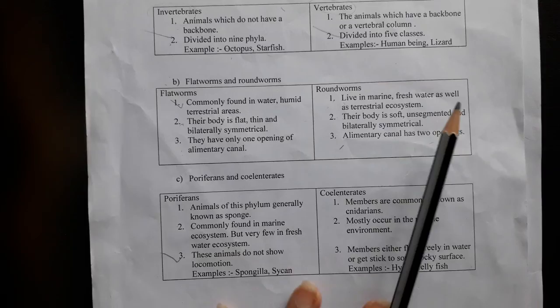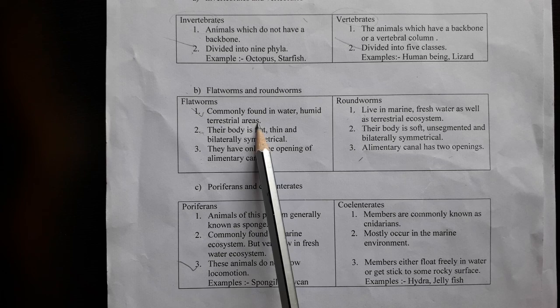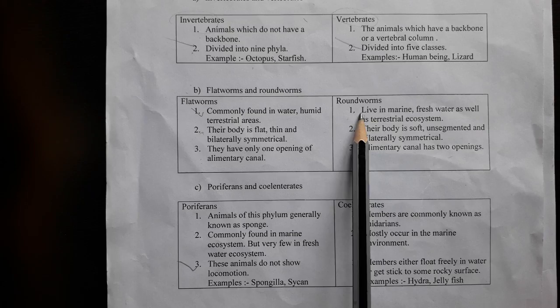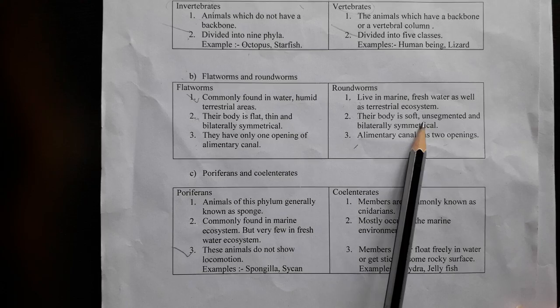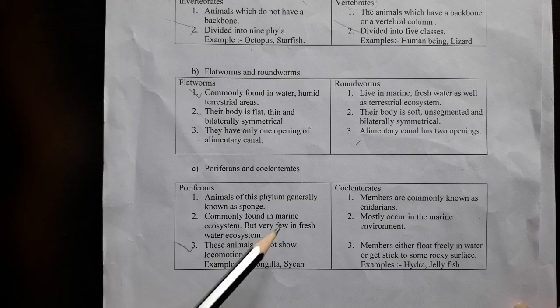Flatworms and roundworms: flatworms are commonly found in water; their body is flat, thin, and bilaterally symmetrical. Roundworms have a soft, unsegmented, bilaterally symmetrical body. Flatworms have only one opening of the alimentary canal, while roundworms have two openings.